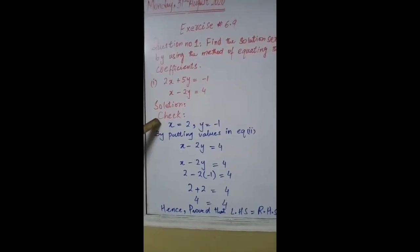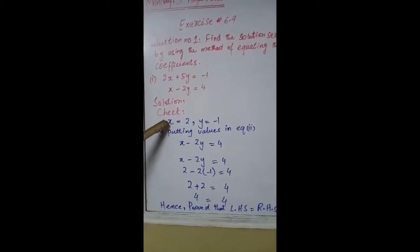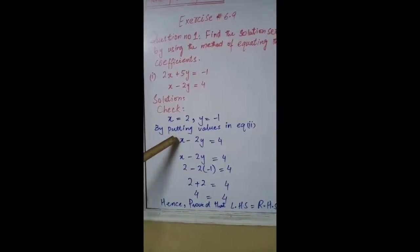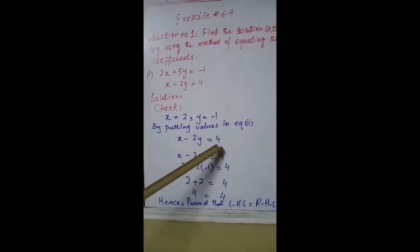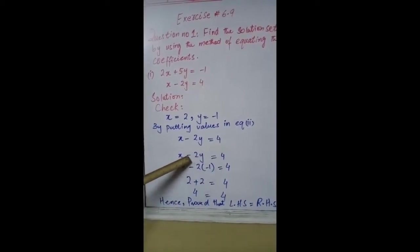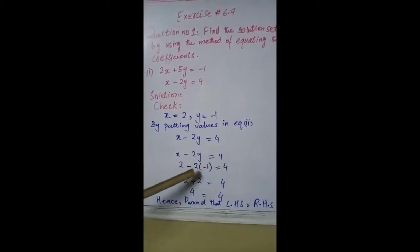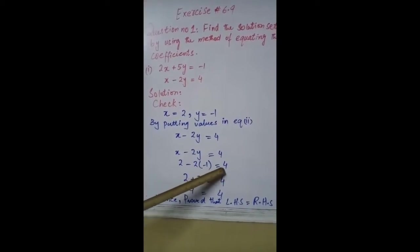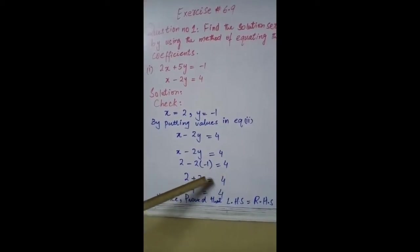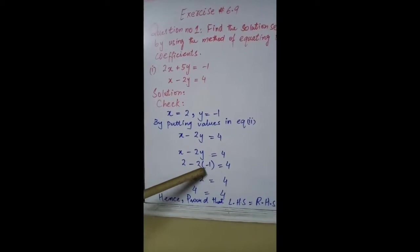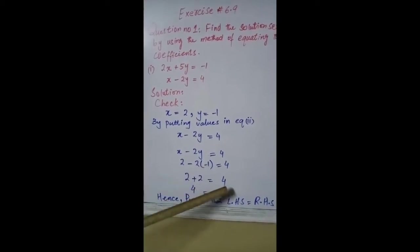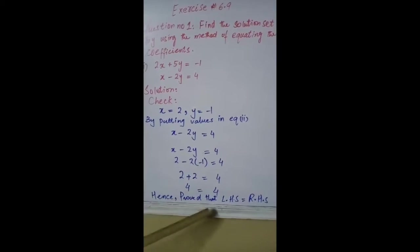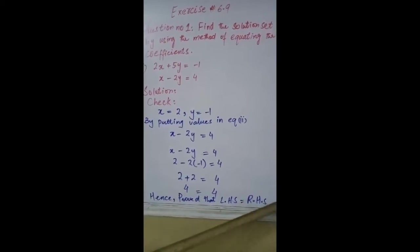Check: x = 2, y = -1. Putting values in equation 2: x - 2y = 4 → 2 - 2(-1) = 2 + 2 = 4. And 4 = 4. Hence proved that left-hand side is equal to right-hand side.